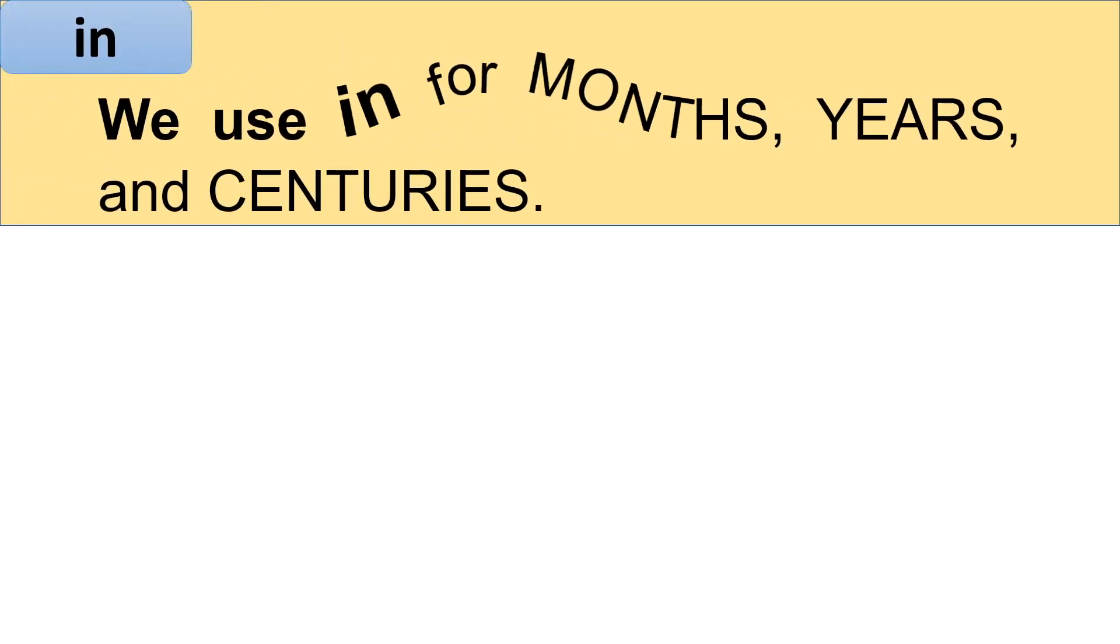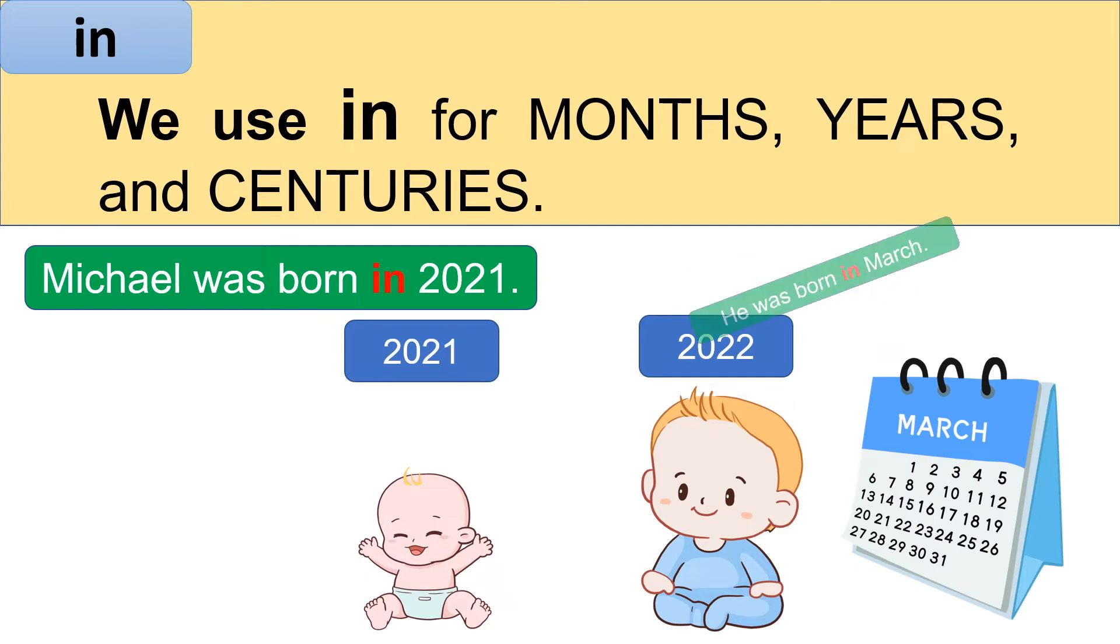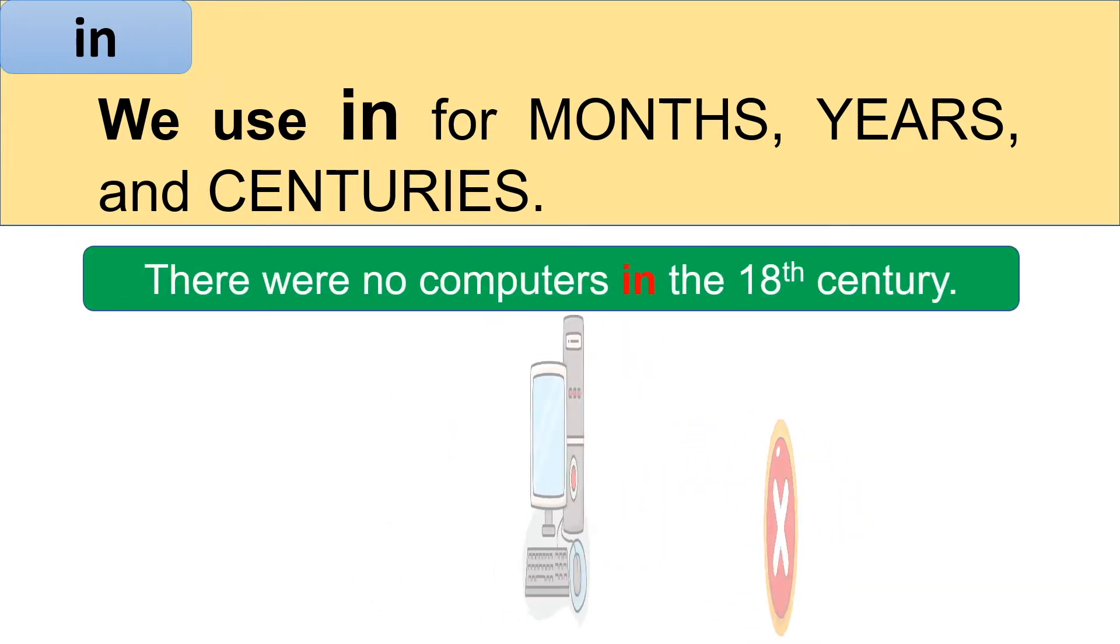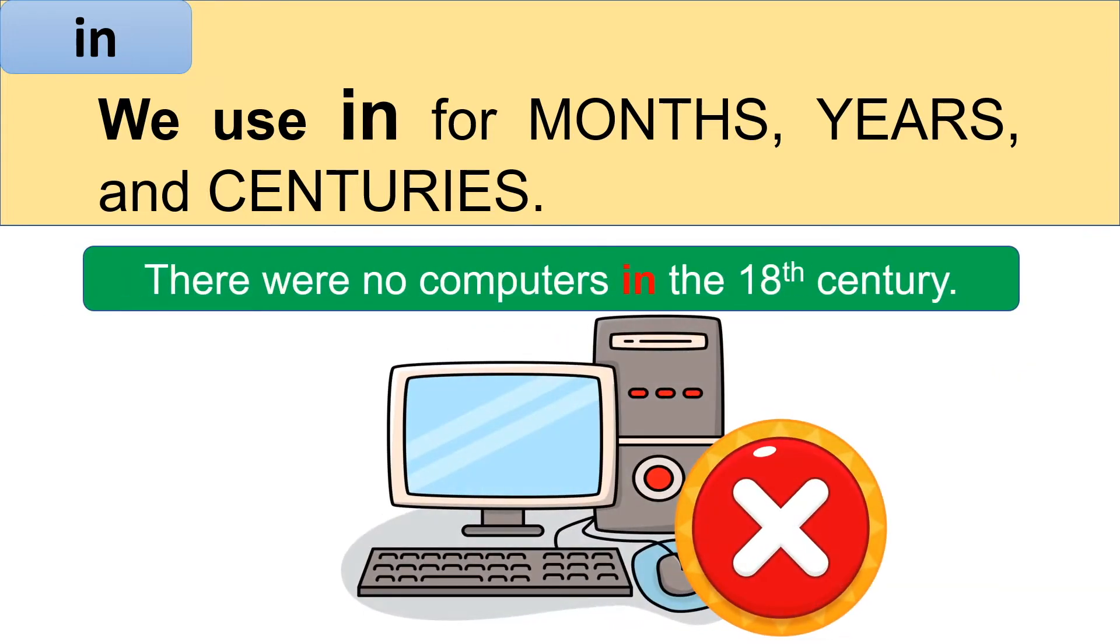We use in for months, years, and centuries. For example, Michael was born in 2021. He was born in March. For example, there were no computers in the 18th century.